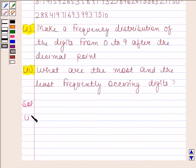We will first construct the frequency distribution table of the digits 0 to 9 after the decimal point.